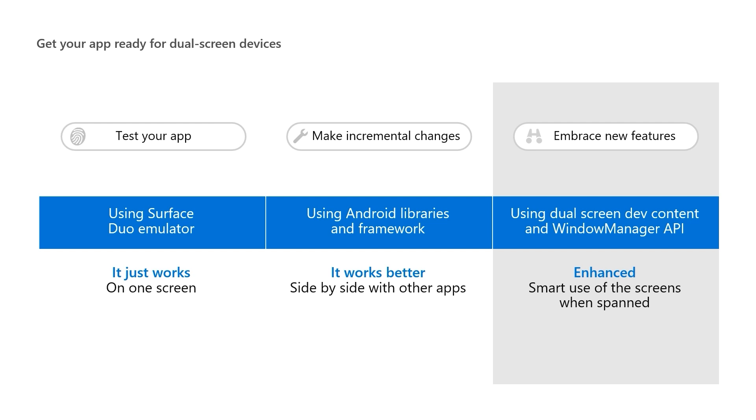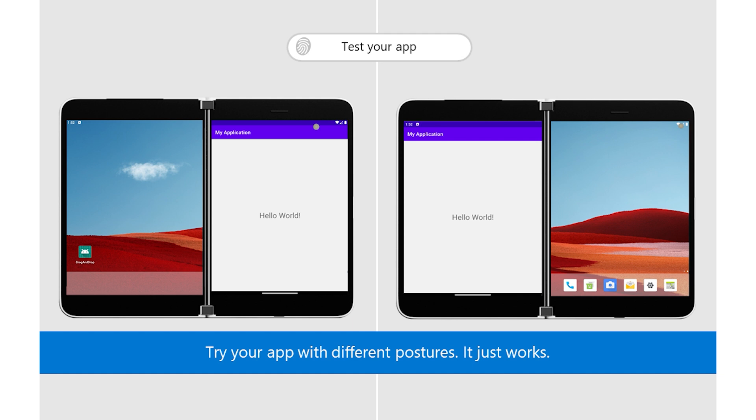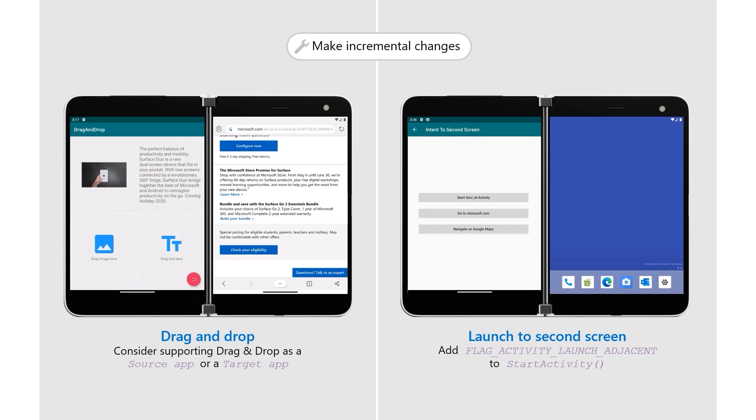When testing your application, make sure you don't make aspect ratio assumptions in your code — this can affect the placement of UI. Also, avoid locking your application to a specific orientation. Foldable devices are meant to be versatile and used in multiple postures, so try out all those scenarios when testing your application. When making changes to your app, consider adding drag-and-drop support. Your app can be a source for content or as a target destination, or both. Look today at one of our samples — they contain code for you to copy and paste into your app. You can also think about interactions your app can do on the other screen. With a one-line code change and adding a flag to the start activity, your app will launch content on the other screen. You can also launch other applications and intents to complete your user flow.